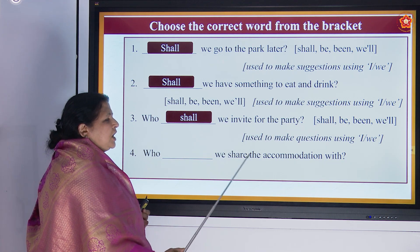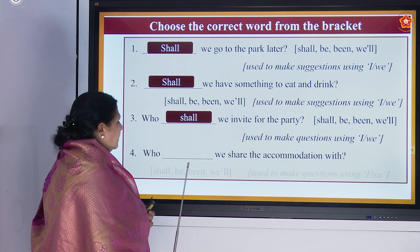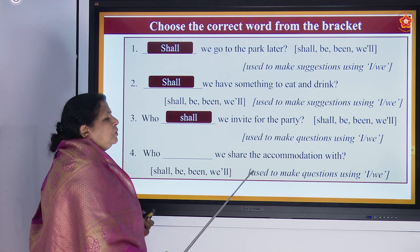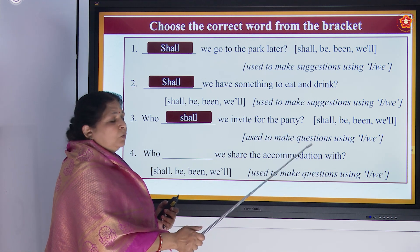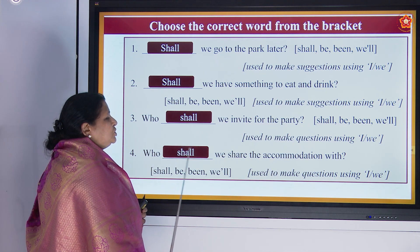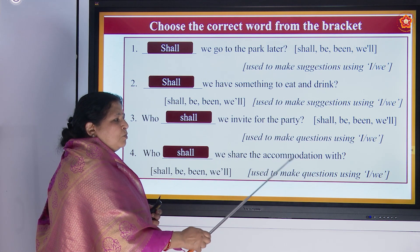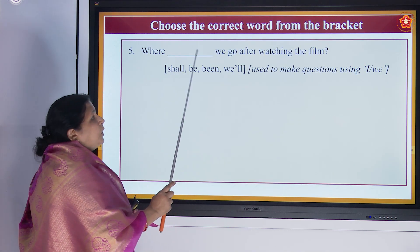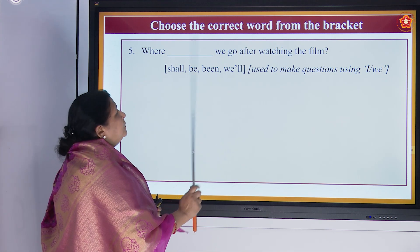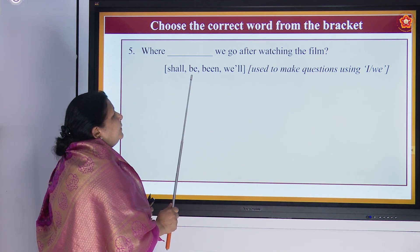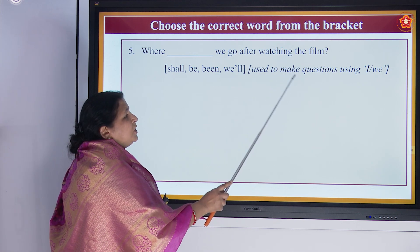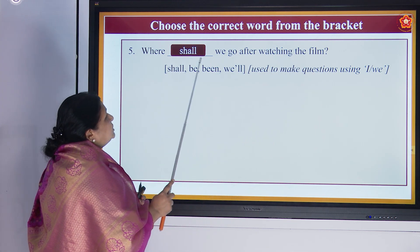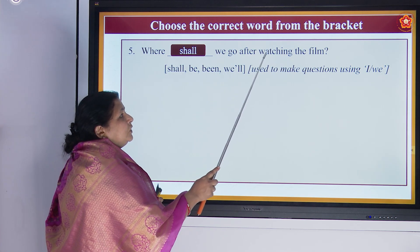'Who dash we share the accommodation with?' — 'Who shall we share the accommodation with?' Used to make questions using 'I' and 'we'. Next: 'Where dash we go after watching the film?' — shall, be, or will? Used to make questions using 'I' and 'we'. Answer: 'Where shall we go after watching the film?'